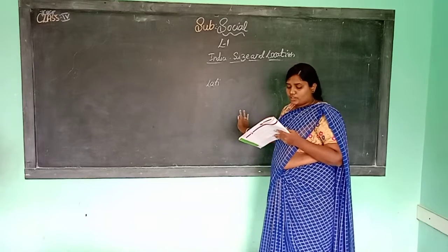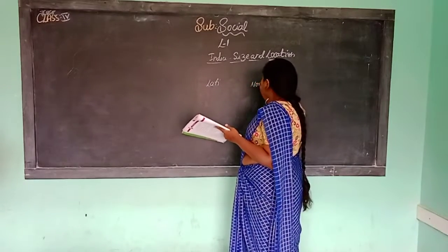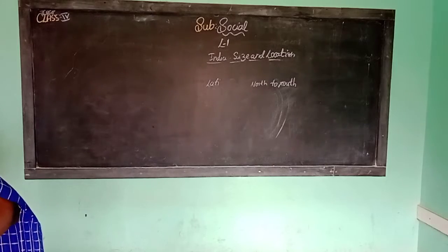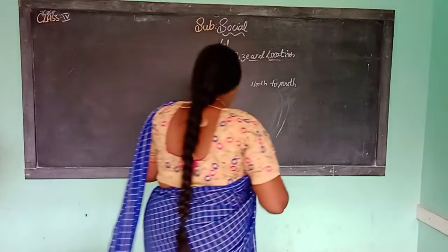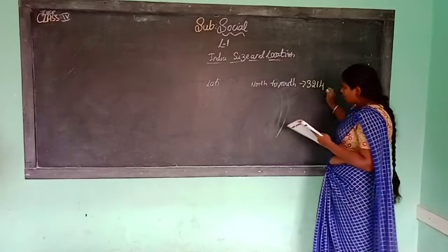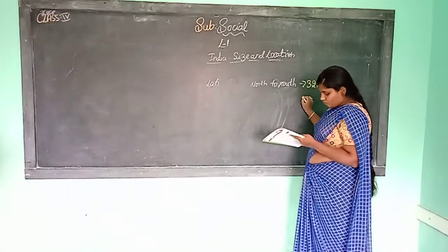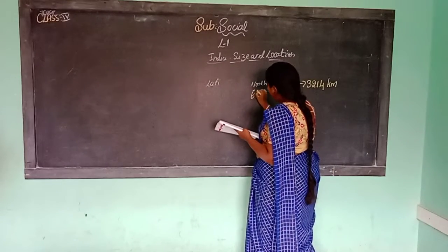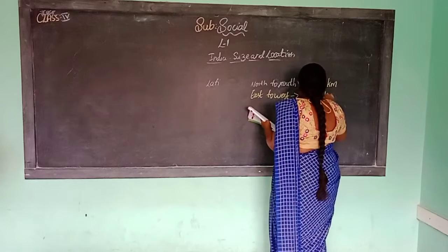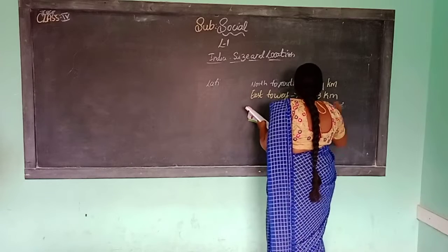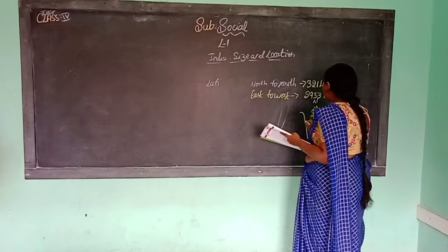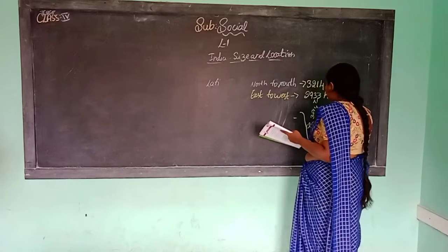What is the measurement of India? From north to south it will be 3,240 km. From west to east the distance will be 2,933 km.